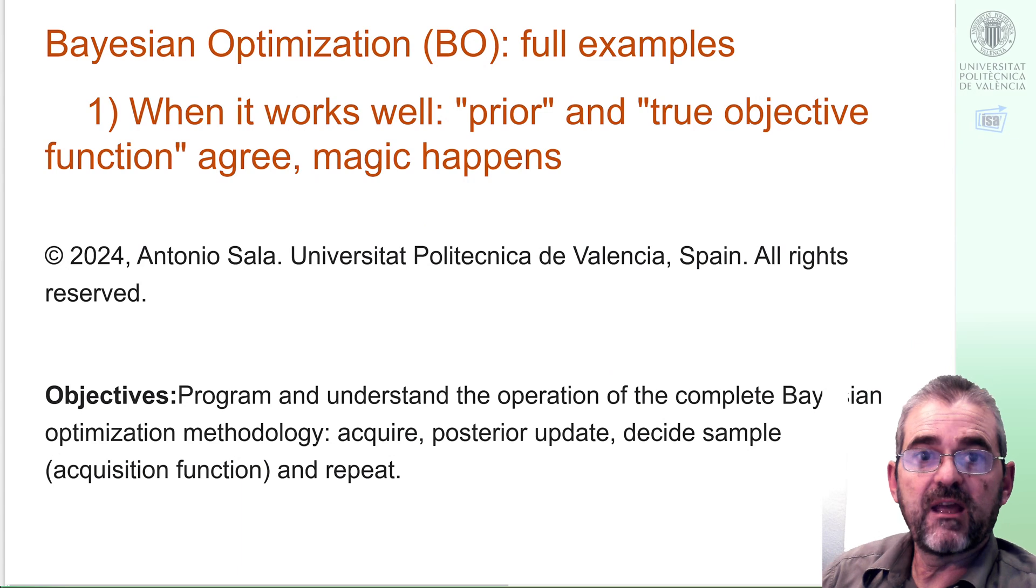Hi, I'm Antonio Sala and in this video we will discuss a case study of Bayesian optimization, trying several acquisition functions in an example in which prior and true objective function have a good agreement, so everything works perfectly.